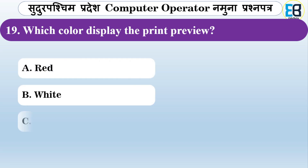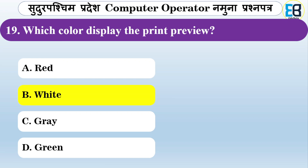Which color does the printer print preview icon display? Options are red, white, gray, or green. The answer is gray — the print preview icon is displayed in gray color.